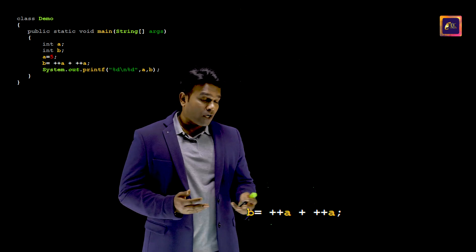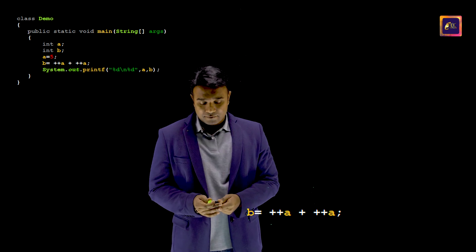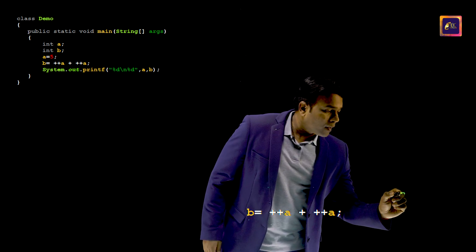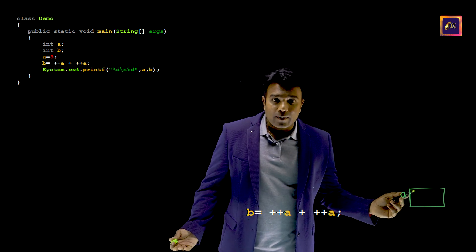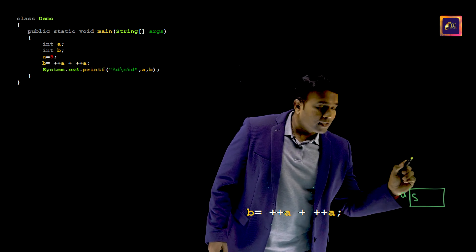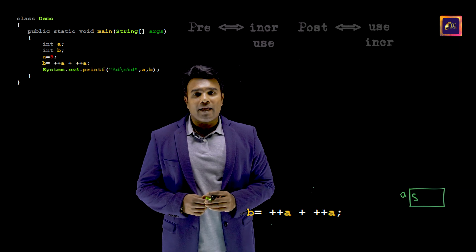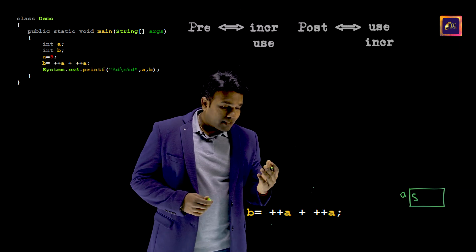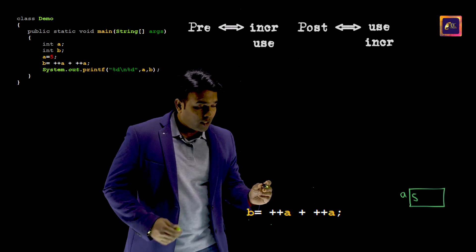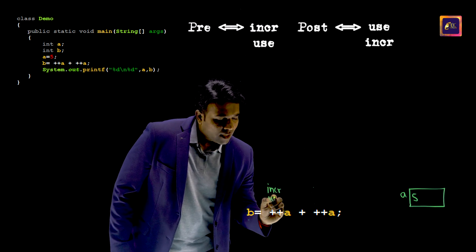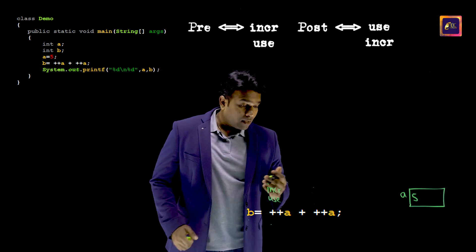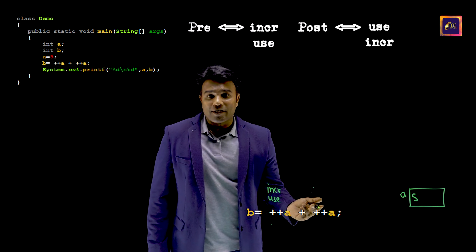What I really need to focus on is this expression — how to evaluate it. I will have to create a variable A, and you know very well that it is 5 that we have initially placed inside variable A. This is pre-incrementation, and according to our technique, we need to increment first and then use it later. This is also pre-incrementation.